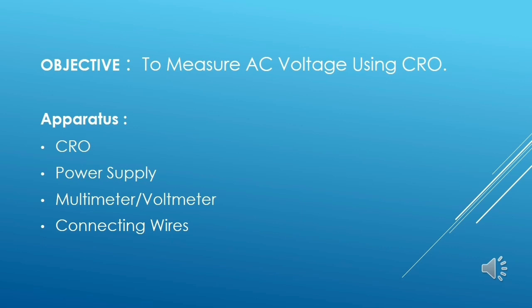The objective of this experiment is to measure AC voltage using CRO. The apparatus needed are: CRO (cathode ray oscilloscope), an AC power supply, a voltmeter or multimeter to measure voltage from the power supply, and some connecting wires to connect the circuit.